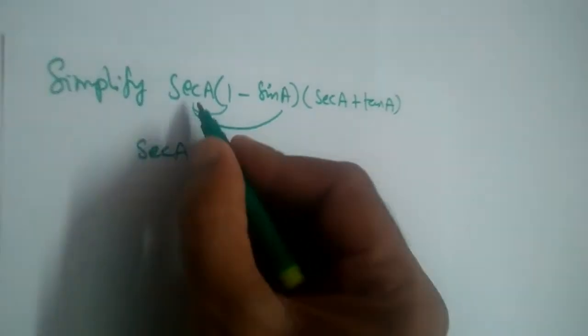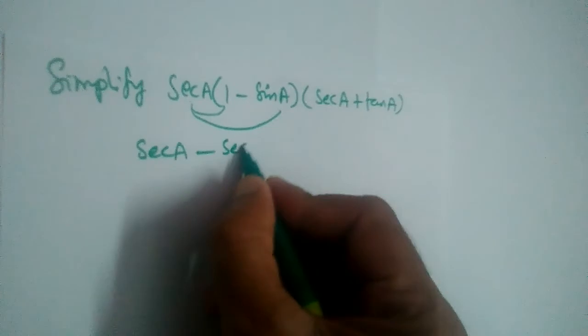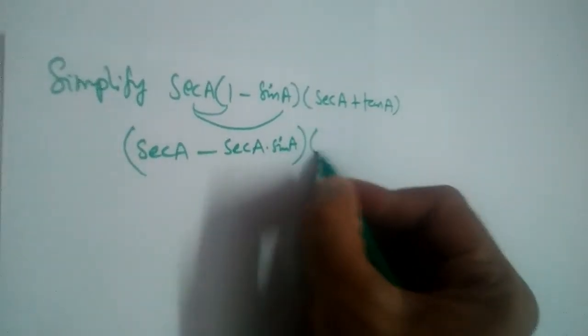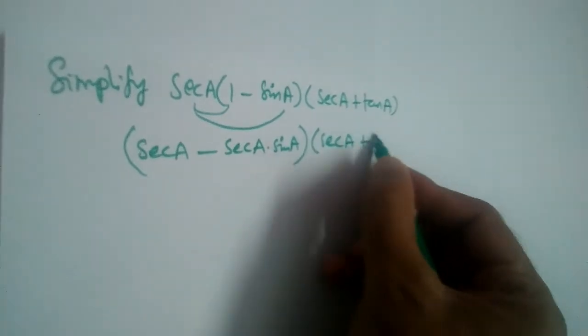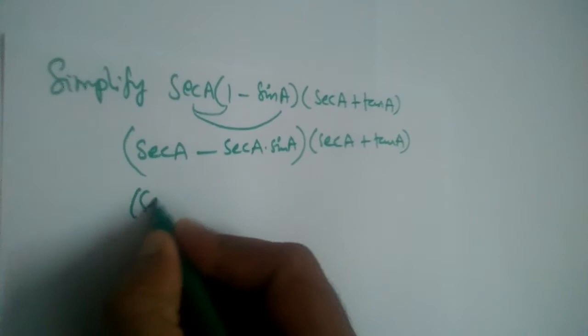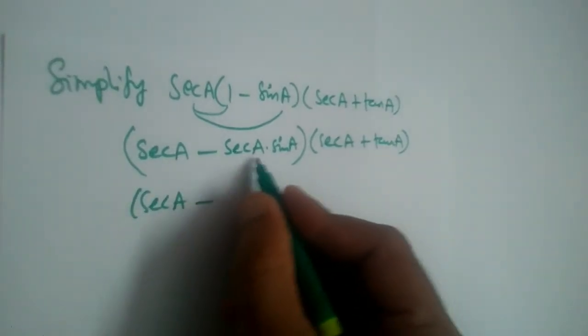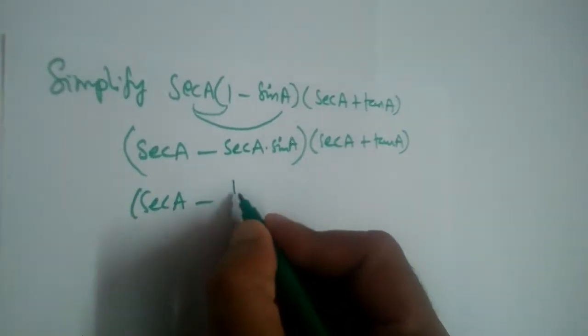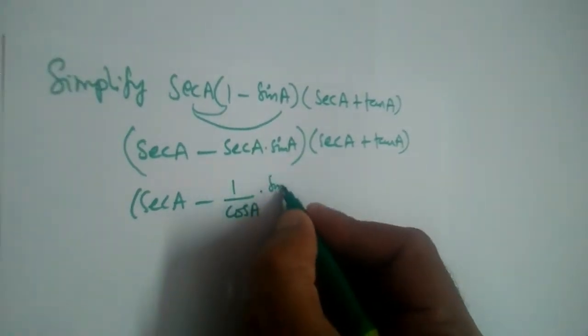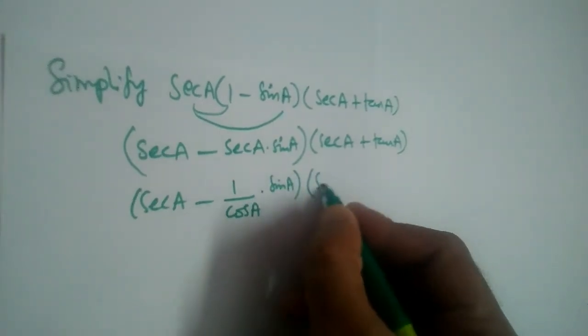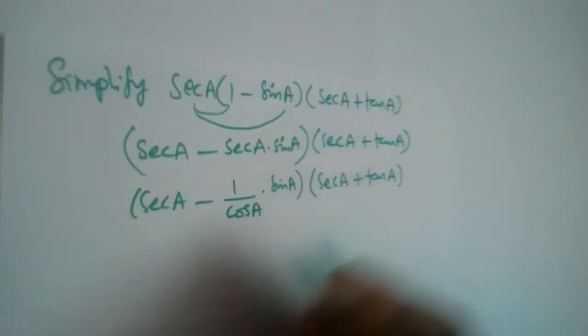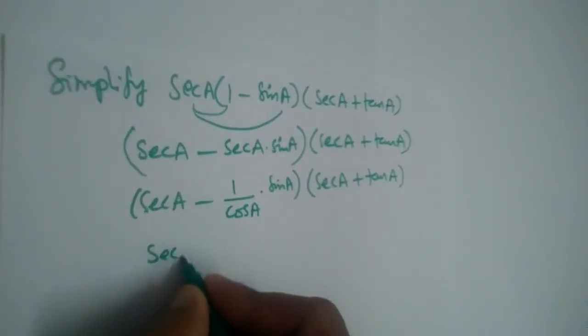Secant A into 1 is secant A minus secant A into sin A, and this is secant plus tan A. So this is secant A minus secant - how can we write secant? 1 by cos A, right? Into this is sin A. This is secant A plus tan A.